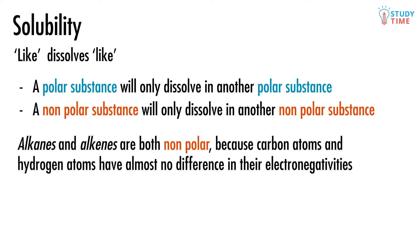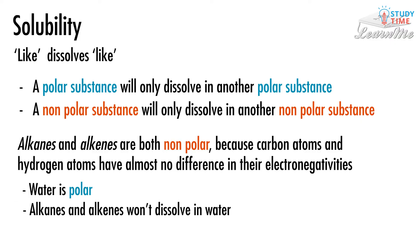Alkanes and alkenes are both non-polar, because carbon atoms and hydrogen atoms have almost no difference in their electronegativities. By now, you'll hopefully have a general idea of what we mean when we say polarity, and how we get polar substances. Because alkanes and alkenes are non-polar, but water is polar, we cannot dissolve alkanes or alkenes in water.